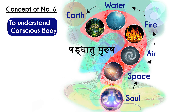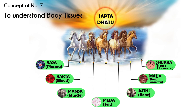We have seven tissues: first, rasa (lymph/plasma); second, rakta (blood); third, mamsa (muscle); fourth, meda (fat); fifth, asthi (bone) — what you call coast; sixth, majja (bone marrow); and seventh, shukra (hormones). So seven tissues. Then we have eight types of directional influence on the body.